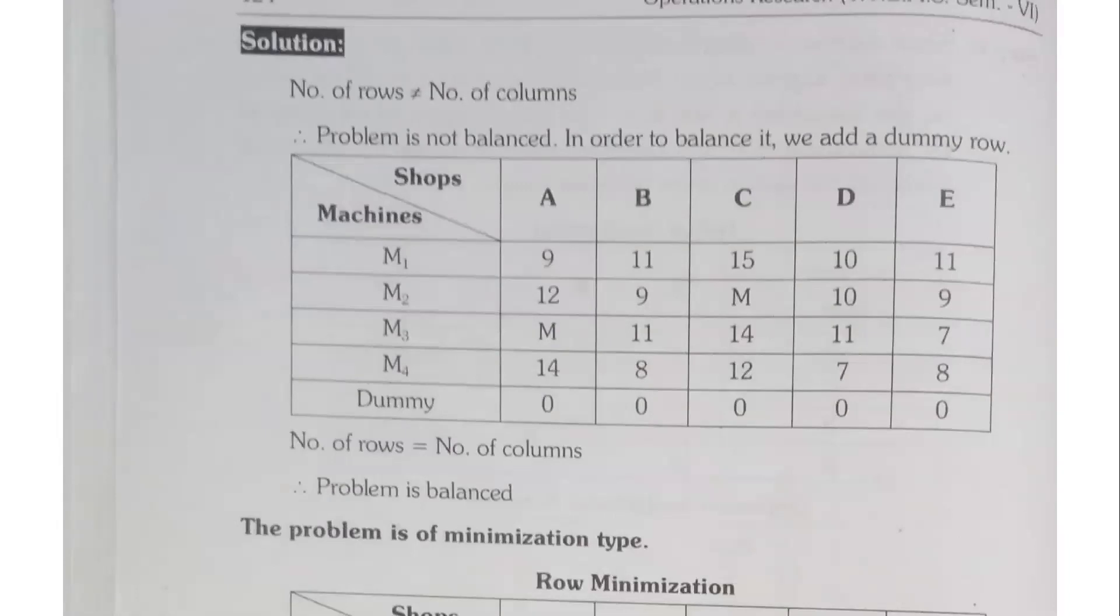Number of rows are not equals to number of columns, so problem is not balanced. In order to balance it, we add a dummy row. So we will add dummy 0, 0, 0, 0, 0 in all the shops. Now number of rows are equals to number of columns. Now the problem is balanced.